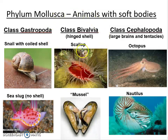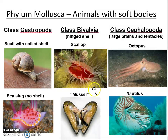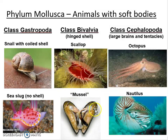In the class Bivalvia, these organisms are characterized by having a hinged shell, secreted by the mantle. You can see examples with the scallop and the mussel. If you look inside the mussel, you can really see that visceral mass with all of those internal organs.